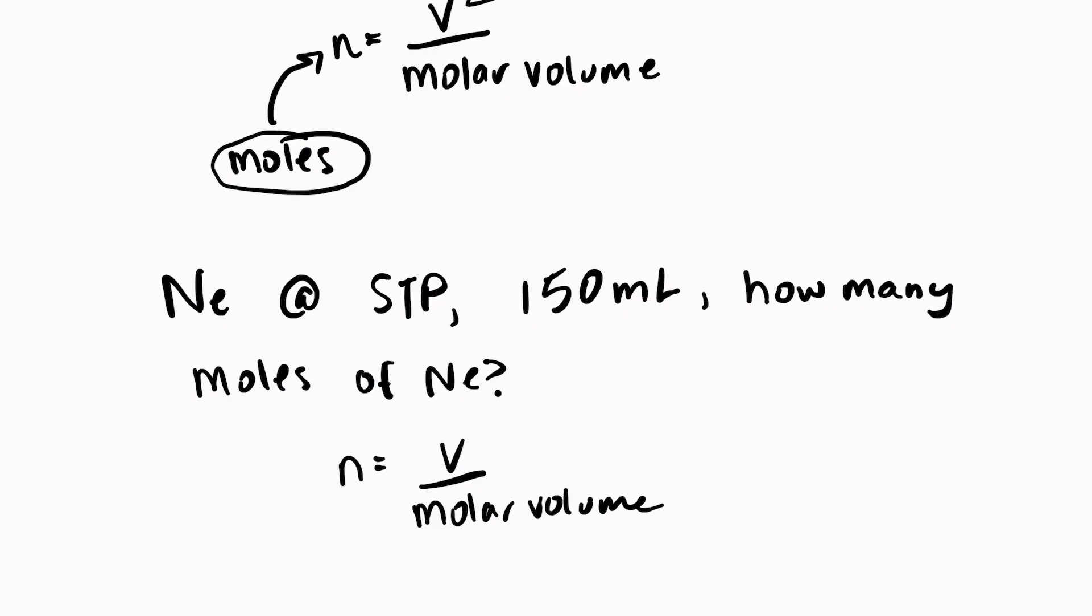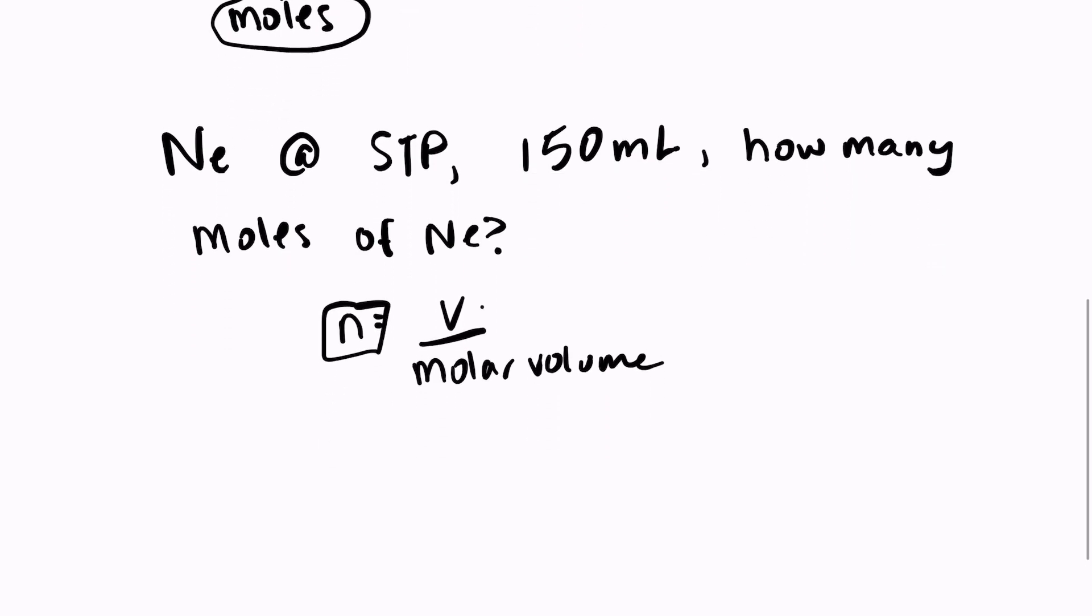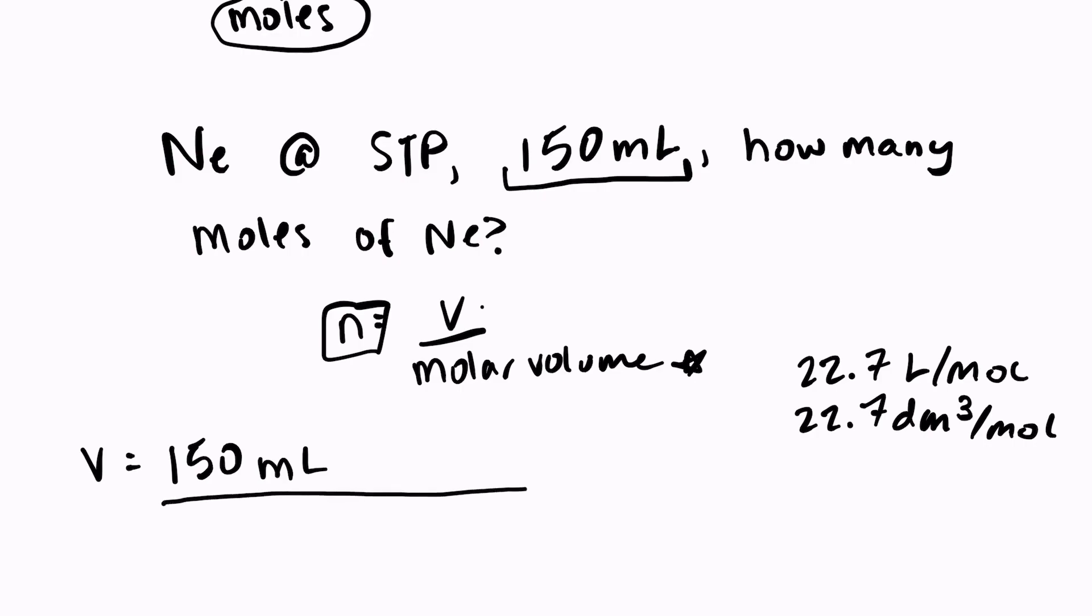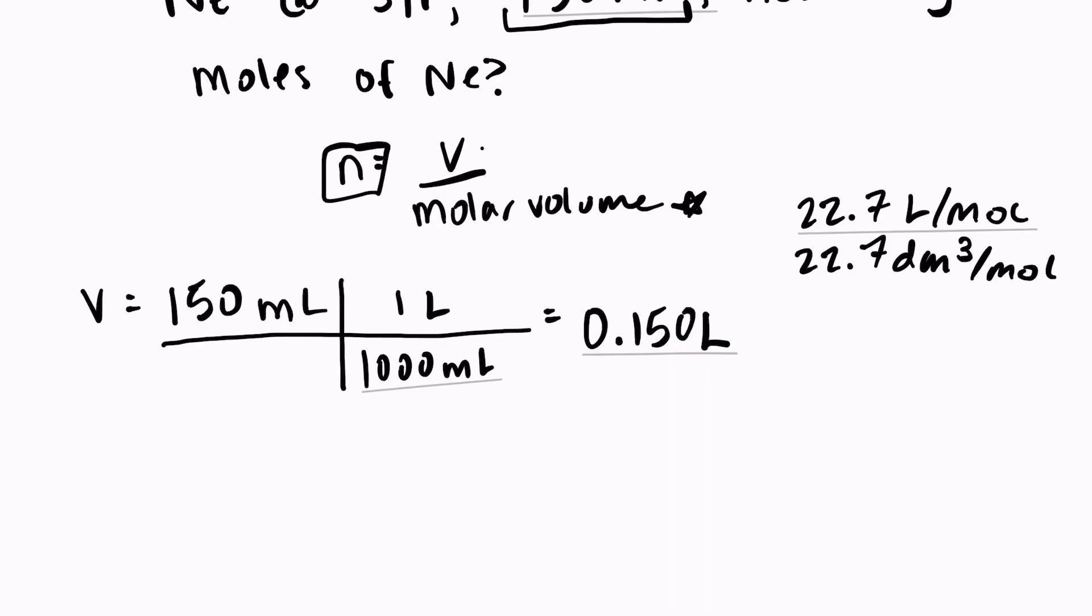We're solving for N. So we just need to take our volume over the molar volume. But we do need to double check our units. We have 150 milliliters. We need the unit liters because molar volume is 22.7 liters per mole. So I need to convert milliliters into liters using dimensional analysis. There's 1000 milliliters in one liter. So 150 divided by 1000, 0.150 liters is my volume.